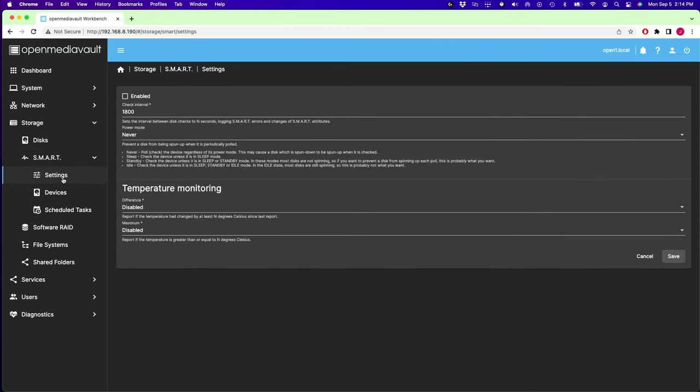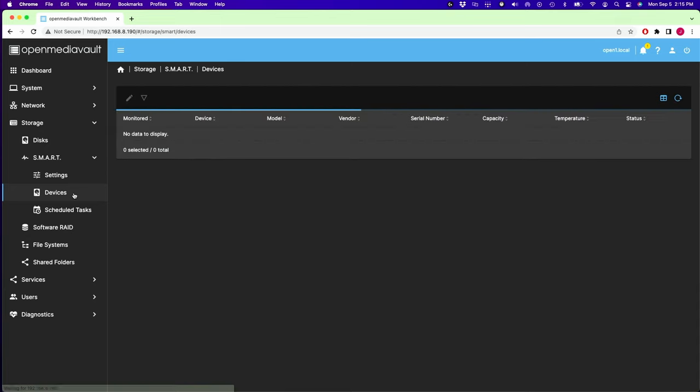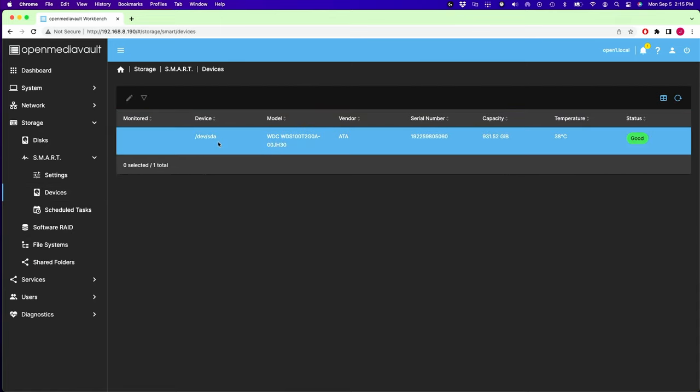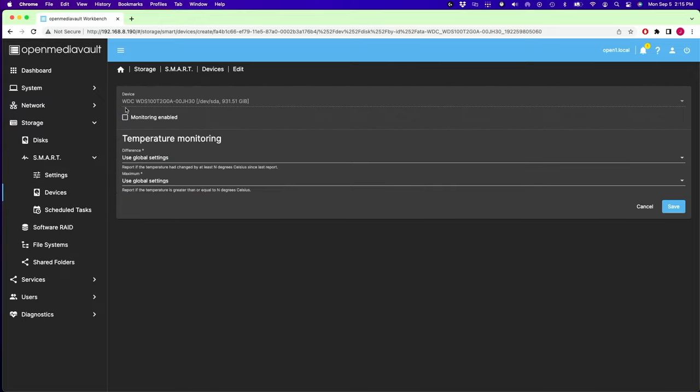Now we're going to click on smart. And we have settings for that. We would turn it on by enabling and then save. So smart checks for disk errors. Next we'll click on devices. And we can pick out a device. And here you can see its status is good. We can also edit it, enable monitoring, and click save.